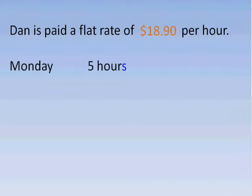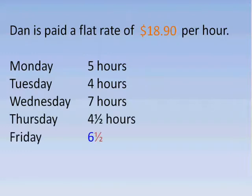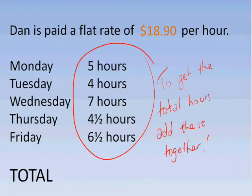On Monday, Dan works 5 hours. Tuesday, 4 hours. Wednesday, he works 7 hours. Thursday, he works 4.5 hours. And on Friday, he works 6.5 hours. So we're going to total up Dan's hours for the week — we just add all these together and we get a total of 27 hours.